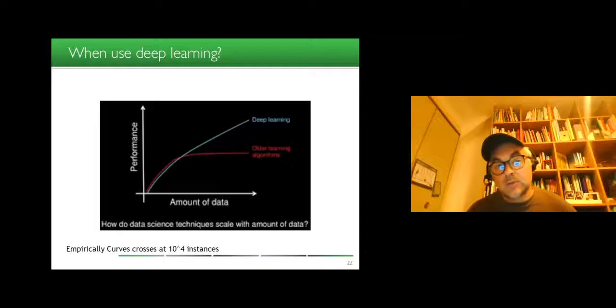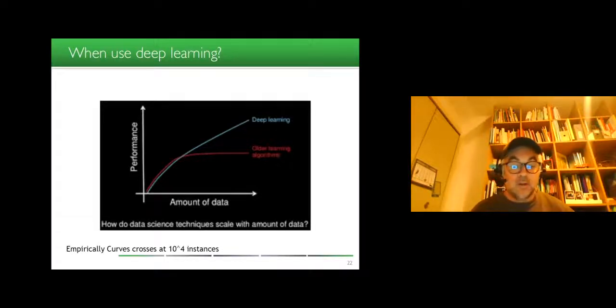Remember that we will use deep learning especially when we have a sufficient amount of instances, meaning sufficient amount of images to typically 10 to the power of 4 images to be classified have to be annotated. We will see at some point that it's possible to reduce by a factor of 10, let's say the number of annotated images to 1000 when you use what is called data augmentation.